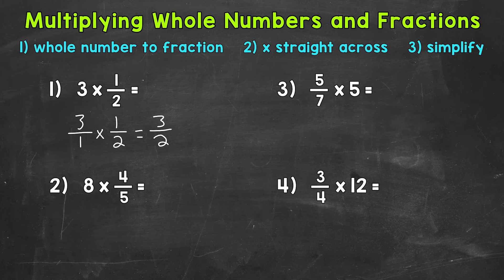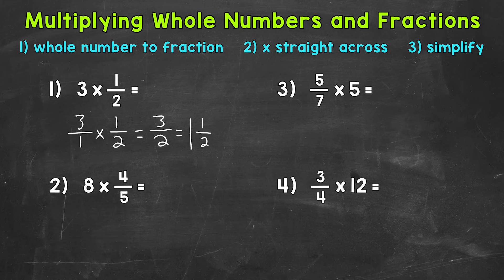We want to convert that to a mixed number — this is the simplifying step. We're going to clean up our answer by dividing the numerator by the denominator: three divided by two. How many whole groups of two can we pull out of three? One. That's our whole number part of our mixed number. The remainder, which is one, is going to be the numerator. Then we keep the denominator of two the same. Always check to see if you can simplify the fractional part. One-half is already simplified, so our final answer is one and one-half.